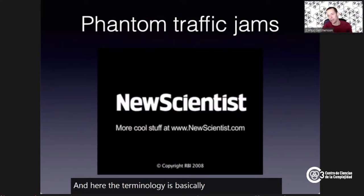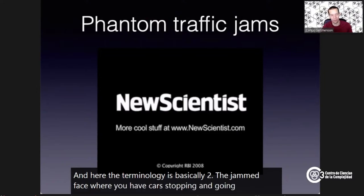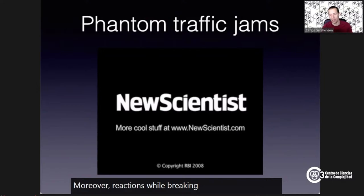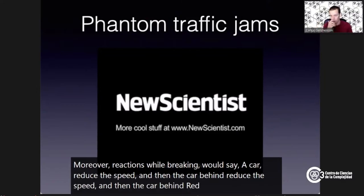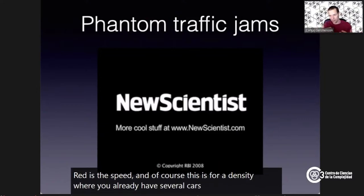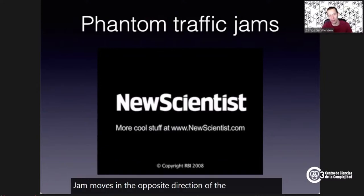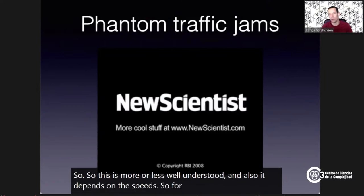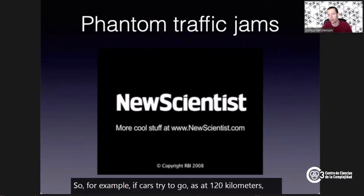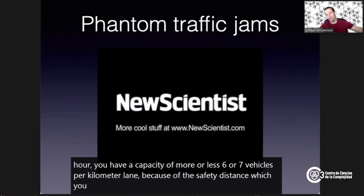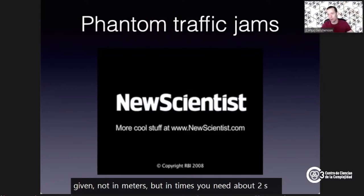The turbulence in traffic is basically the jammed phase where cars stop and go. Random changes in speed or overreactions while braking cause one car to reduce speed, then the car behind does the same, cascading into a traffic jam that moves opposite to the cars. This is well understood. The density and speed interact: at 120 km/h, you have a capacity of roughly 6–7 vehicles per kilometer lane because of the safety distance — approximately two seconds between vehicles to be able to brake.